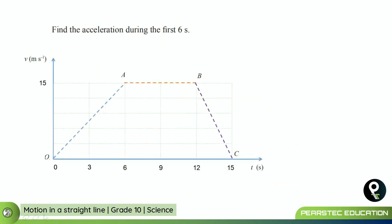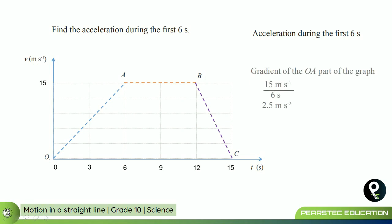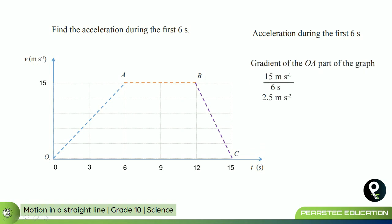The second question asks us to find the acceleration during the first six seconds. The acceleration is the gradient of the OA part of the graph: 15 meters per second divided by 6 seconds, which gives 2.5 meters per second squared.